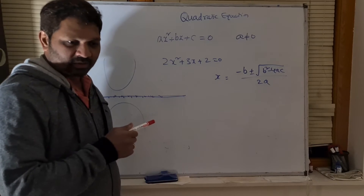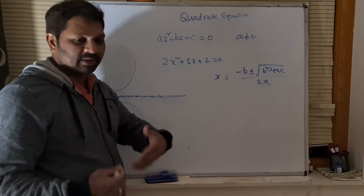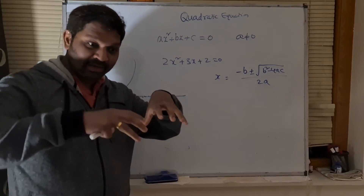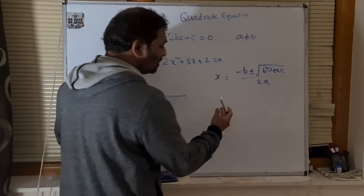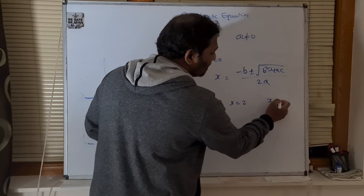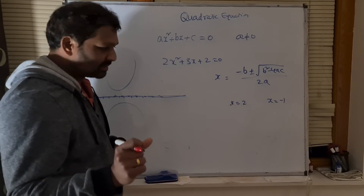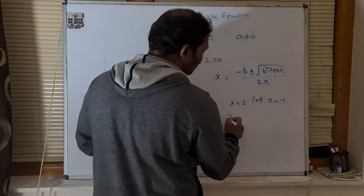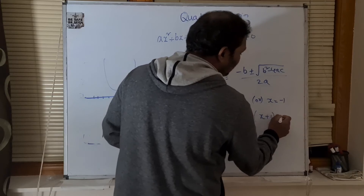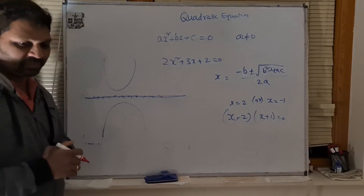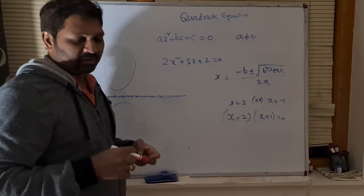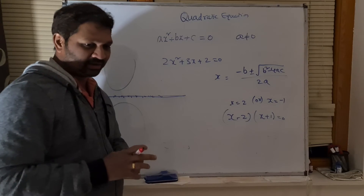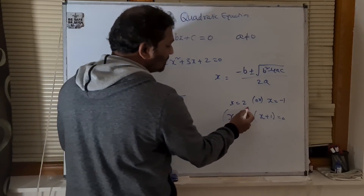The factorization method: if you're not able to figure out the factors directly, use the quadratic formula to find the roots, then build the factors from those roots. For example, if x = 2 and x = −1, the factors are (x−2)(x+1). This is reverse engineering — going from the answer back to the question. So you can find factors even when they're not obvious.